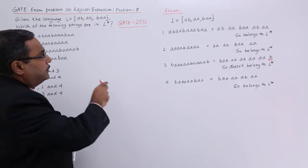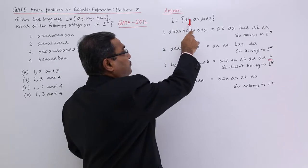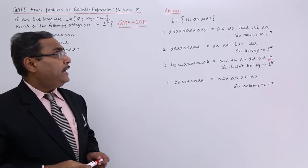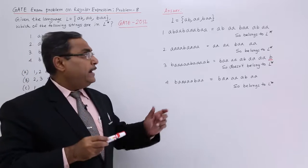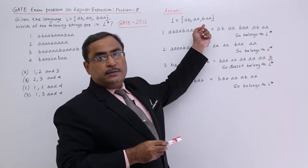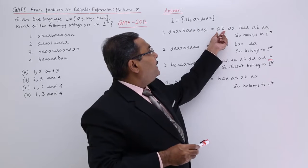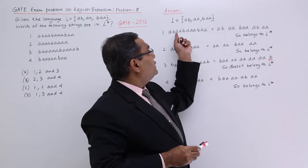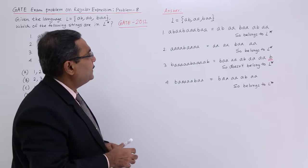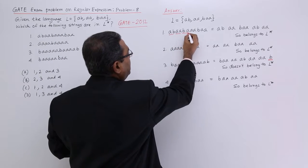The first string — these are the three component strings: ABA, ABAA, and BAA. I shall write the particular given string with the help of these substrings. You see it is ABAA — I am getting ABAA, then I am getting BAA. In this way, ABAABAA is formed.